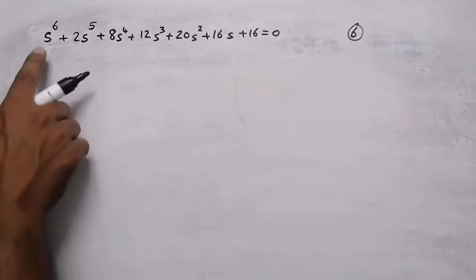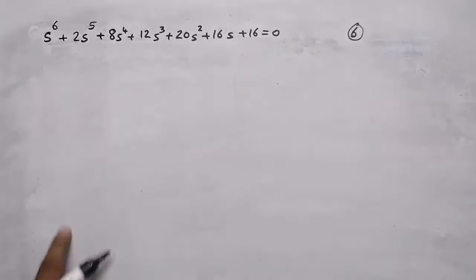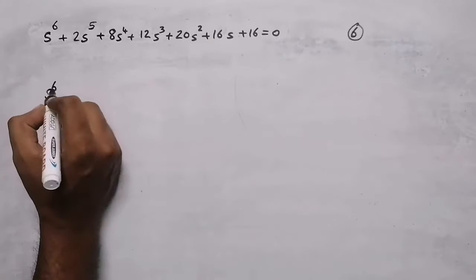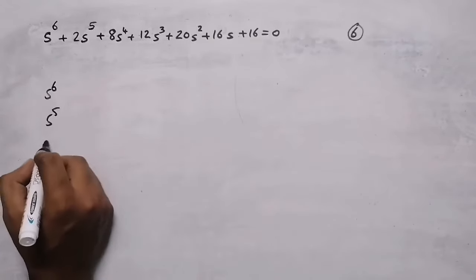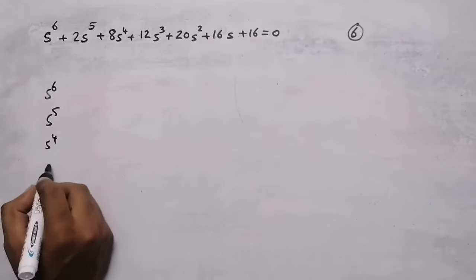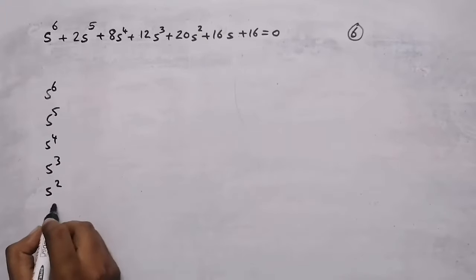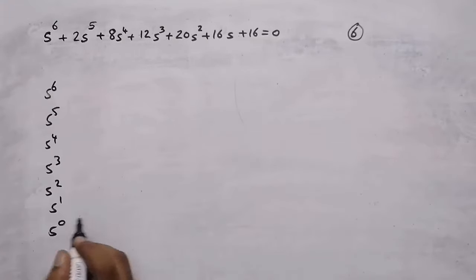The first step is to write the powers of s in a column format. The highest power is 6, so we write s^6, s^5, s^4, s^3, s^2, s^1, and s^0.